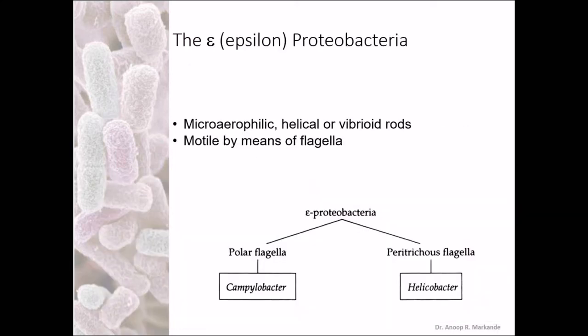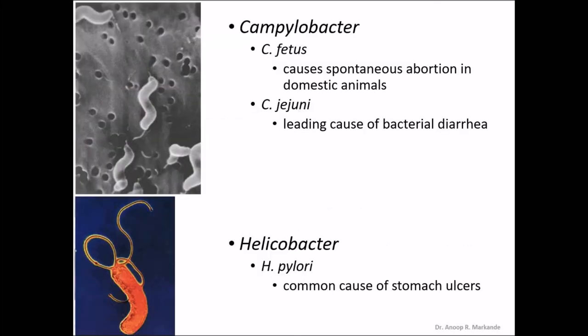Epsilon Proteobacteria — these are microaerophilic, helical or vibrioid rods, motile by means of flagella. With polar flagellum you can see Campylobacter; with peritrichous flagellum you can see Helicobacter. Campylobacter fetus and Campylobacter jejuni are both major pathogens — fetus causes abortions while jejuni causes diarrhea. Helicobacter is a well-known common causative agent for stomach ulcers.